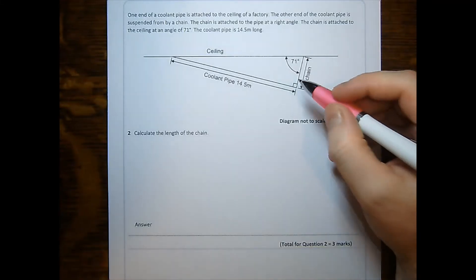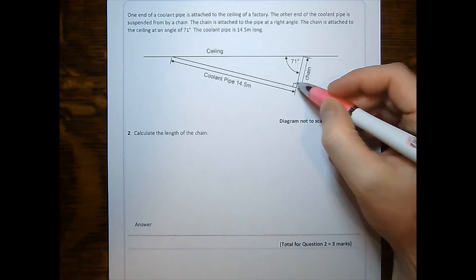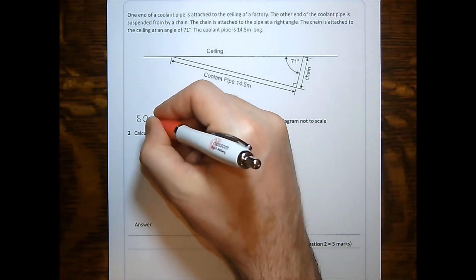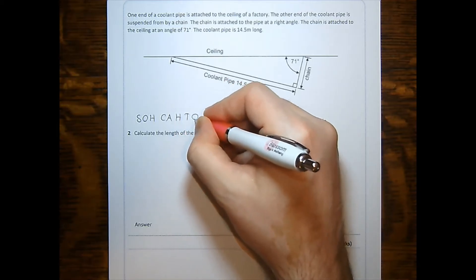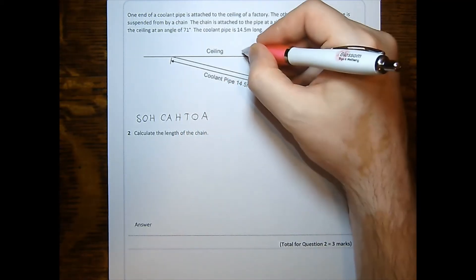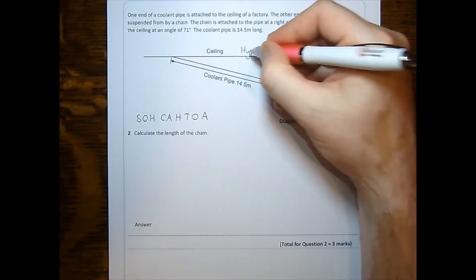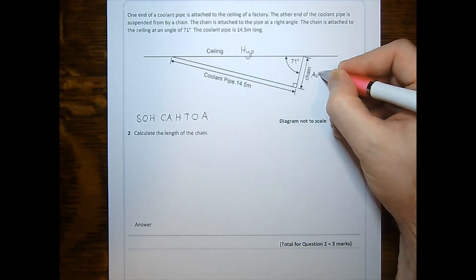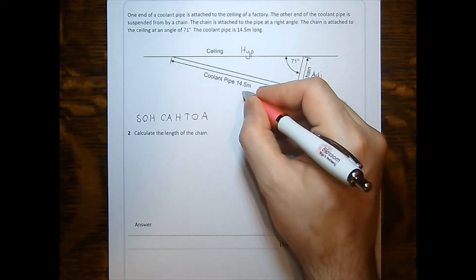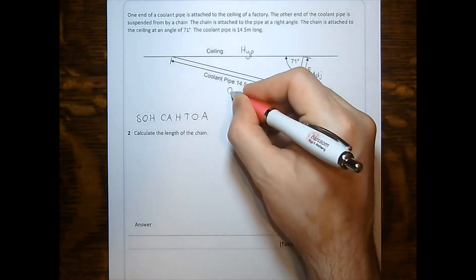In question two, we can see that we've got a right angle, so we should be in no doubt that we are doing a SOH CAH TOA question. Here is my right angle, so the ceiling is my hypotenuse. Adjacent is the chain, and opposite is the pipe.